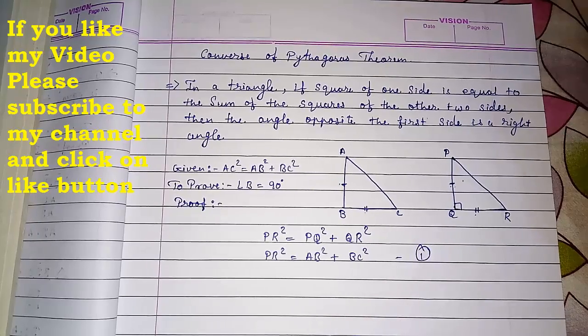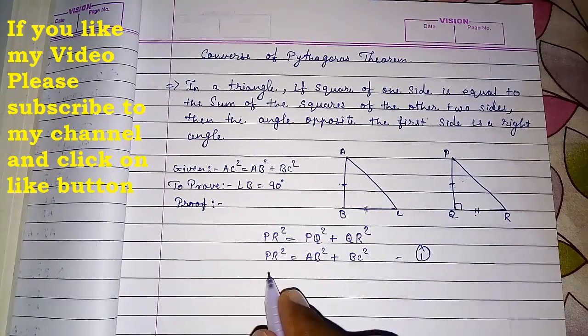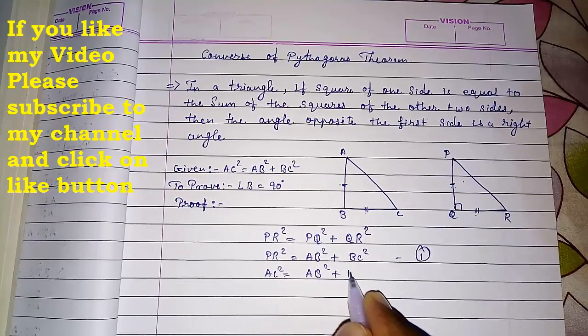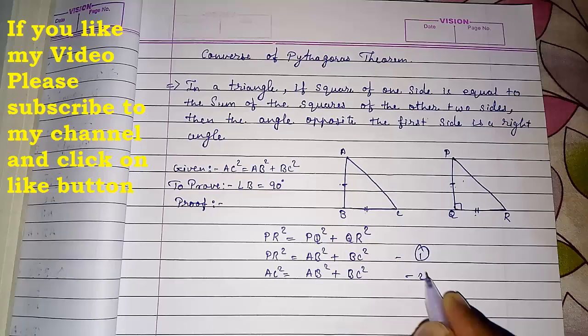Result number one. Now they had given to us that AC² also equals AB² + BC². Result number two.